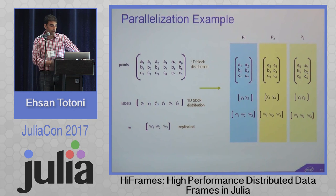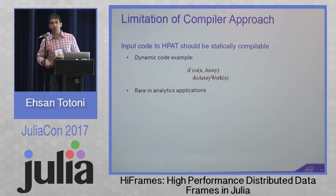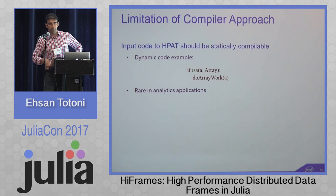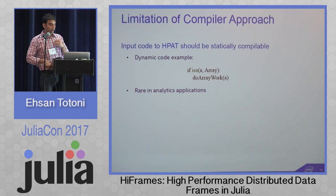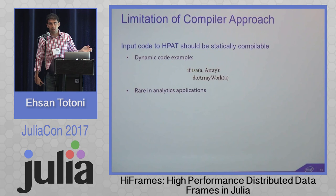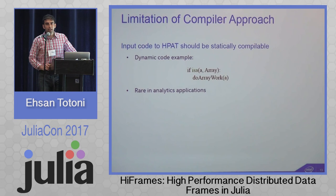The limitation of this compiler approach is that the input to HPAT must be statically compilable. If you write dynamic code where a variable could have different types, the compiler can't analyze and parallelize the program. However, this is quite rare in analytics — I've never seen dynamic code like this used for data analytics — and the Julia community is really good at writing type-stable code.